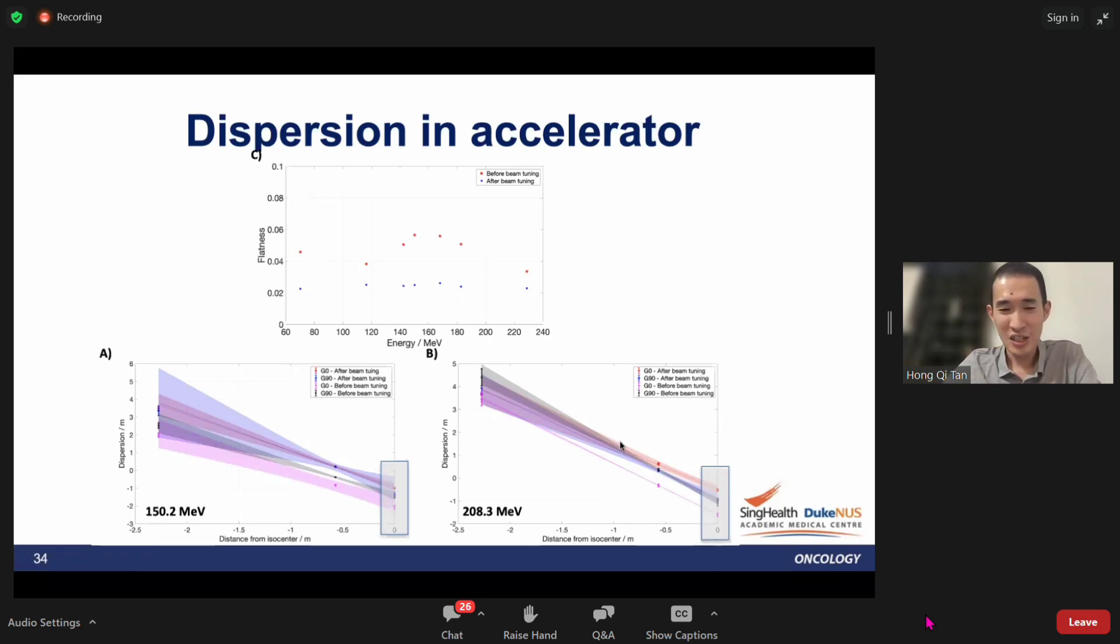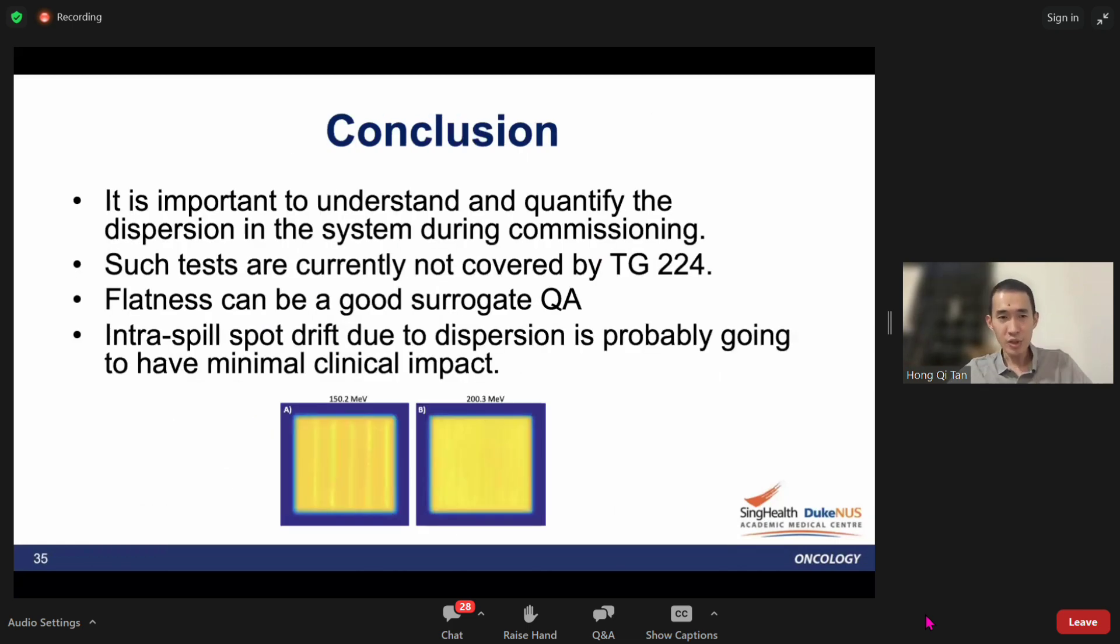Showing the dispersion measurement helped convince the Hitachi engineer to do something about the tuning, and in the end you get better beam qualities and better treatment plans for the patients. In conclusion, we think it's important to understand and quantify the dispersion system during commissioning. You don't have to do it as periodic QA—it's very time consuming—but it should be understood first during commissioning. Such tests are currently not covered by TG-224.